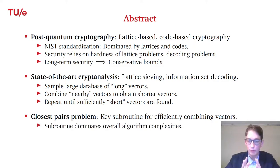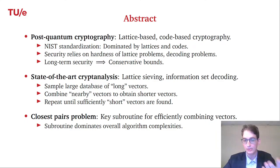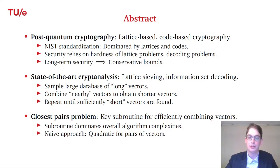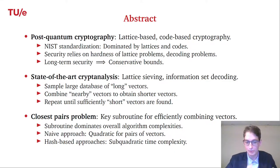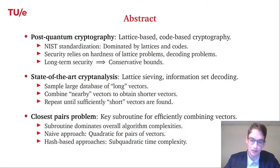When this subroutine dominates the overall algorithm complexity, improving the closest pair algorithm improves the overall complexity of lattice sieving and information set decoding algorithms. Naively you can find all pairs by going through all pairs of vectors, which is quadratic in the size of the database. But there are smarter hash-based approaches working in high dimensions that achieve sub-quadratic complexity.